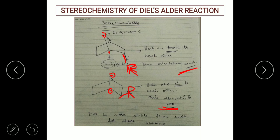This is how you can write down endo selectivity and exo selectivity for Diels-Alder reaction. One very important point: exo is more stable compared to endo for steric reasons, because in exo the R group is facing away from the cavity. In endo, having the R group face towards the cavity causes more repulsion and steric hindrance, which is not favorable for product formation. So exo is always more favorable or more stable than endo.